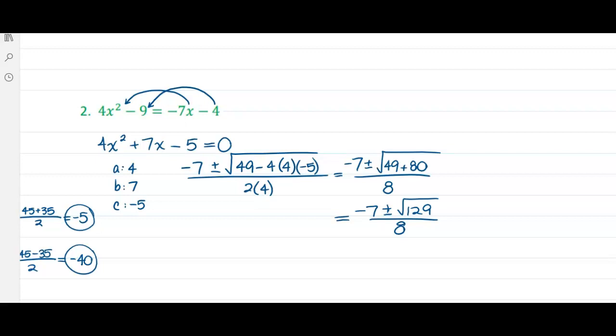And the best thing to do is to just verify that everything is accurate. Negative b plus or minus the square root of b squared minus 4 times a times c all over 2a.